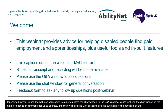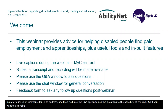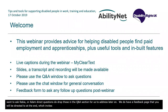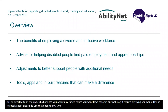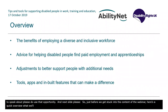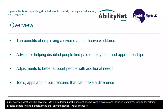If you want to ask Rabia or Adam any direct questions, do drop those in the Q&A section. We also have a feedback page at the end which invites you to tell us about any future topics you'd like us to cover. Here's a quick overview of what we'll be covering: the benefits of employing a diverse and inclusive workforce, advice for helping disabled people find paid employment and apprenticeships, adjustments to better support people with additional needs, and tools, apps and inbuilt features that can make a difference.